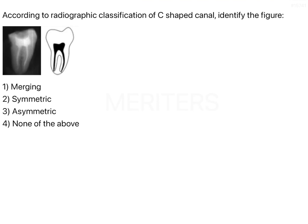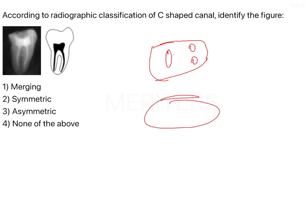What exactly is a C-shaped canal? Usually when you see your teeth, the molars especially — let's say the mandibular molars — you have a mesiobuccal or mesiolingual canal and one large distal canal. In C-shaped canals, what happens is your mesiobuccal and your distal canal are confluent with each other, with your mesiolingual staying separate. Or the other possibility is the distal fuses with the mesiolingual and your mesiobuccal is present as it is. This gives the appearance of a C-shape, and thereby it is called a C-shaped canal.